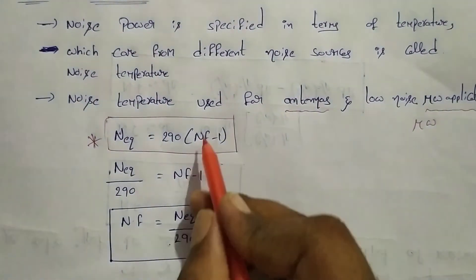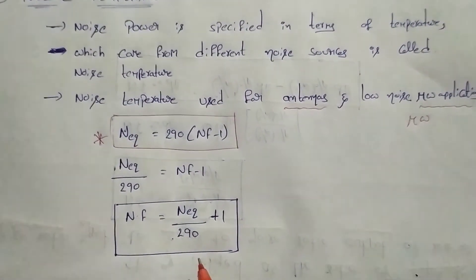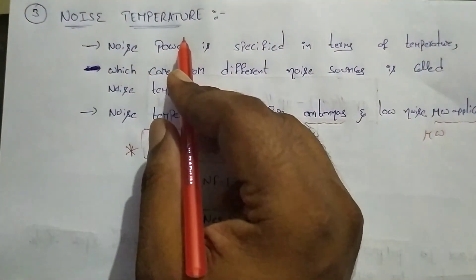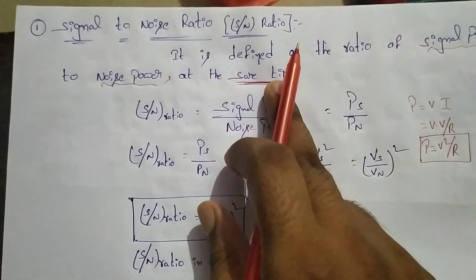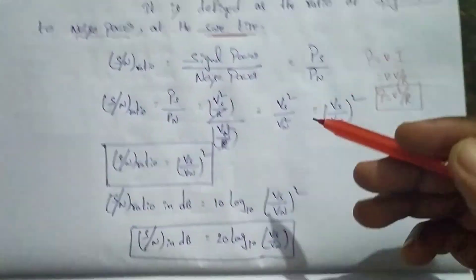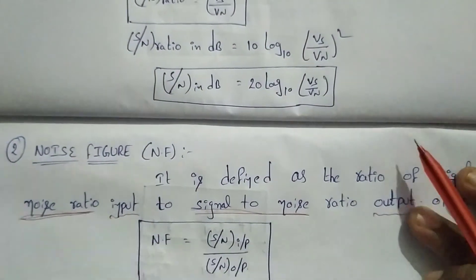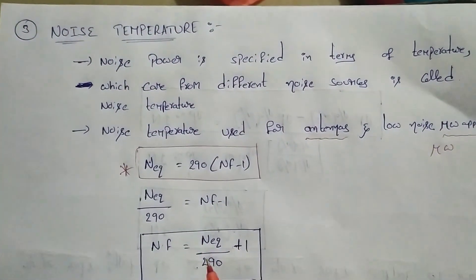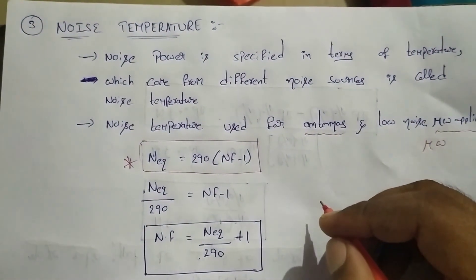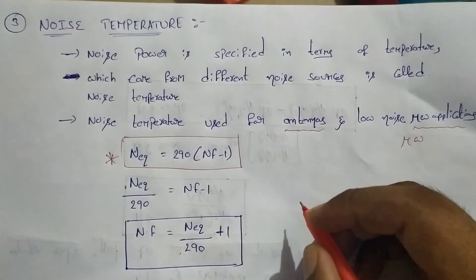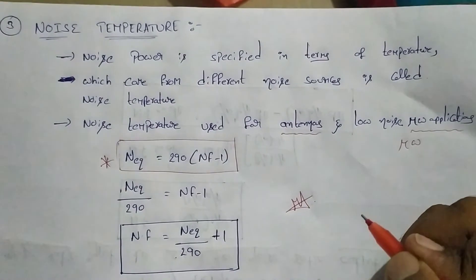This is a small derivative: Nf minus 1 equals Te over 290, so the noise temperature Te equals 290 times (NF minus 1). Now the noise temperature is related to the noise figure. Okay, now thank you. I am Ashok, signing off.